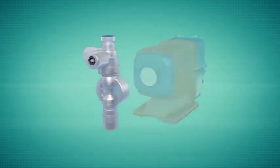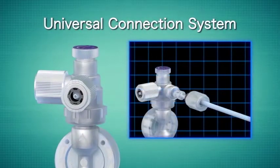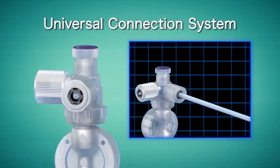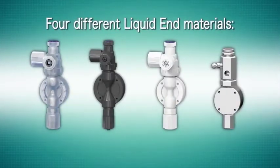The EWN series launches Iwaki's new universal connection system. A new coupling nut design allows for any size connection available while preventing the twisting of tubing during connection. There are four standard liquid end materials available within the product series.